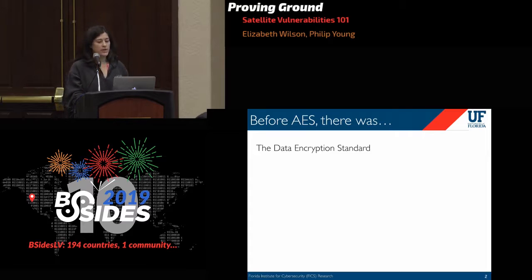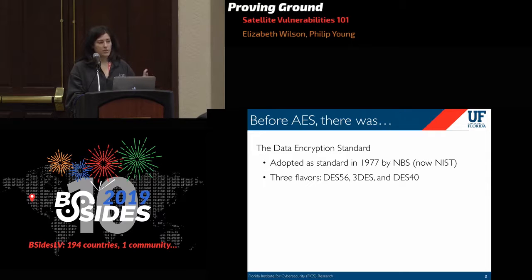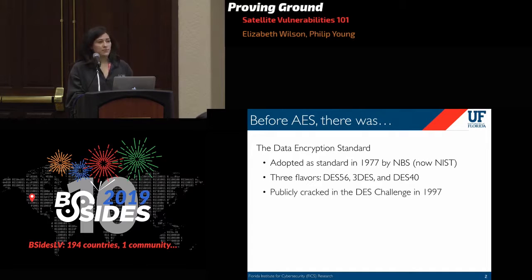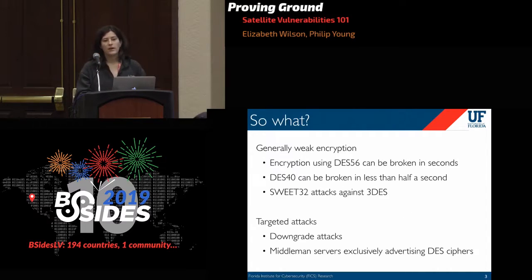The Data Encryption Standard is the evolution of an algorithm developed by IBM in the early 70s. There are three flavors of DES: the original DES-56 with a 56-bit key, Triple DES which is DES run three times with a 168-bit key, and DES-40. The US treats encryption algorithms as munitions, so to export DES to other countries a weaker version was needed — DES-40 with a 40-bit key was the solution. DES-56 was publicly brute-forced in 1997 by participants of the DES Challenge. Shortly after, NIST suggested using Triple DES as a temporary replacement with a longer key length, more resilient to brute force. DES-56 was deprecated shortly after, and Triple DES followed just last year.